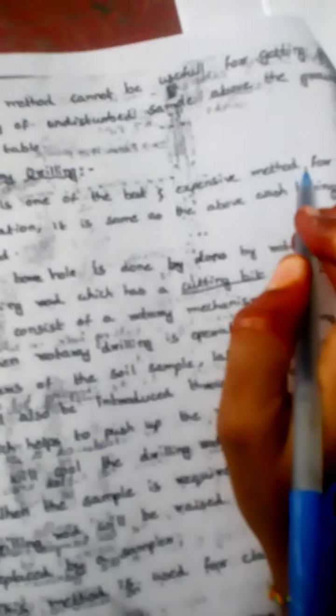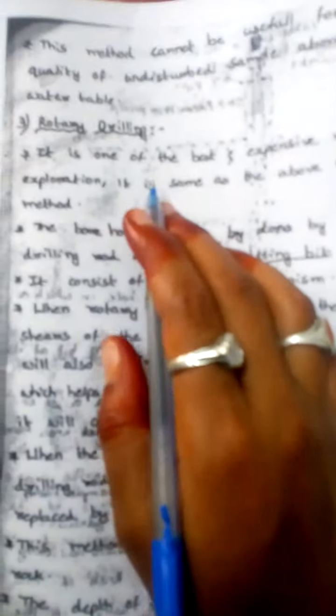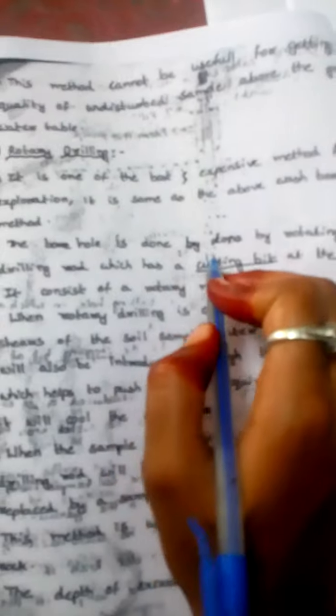Rotary drilling is one of the best and inexpensive methods for soil exploration. The soil exploration is the same as wash boring. The work is done by rotating the drilling rod.